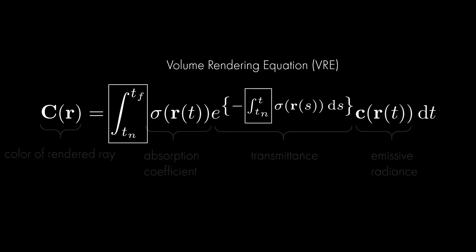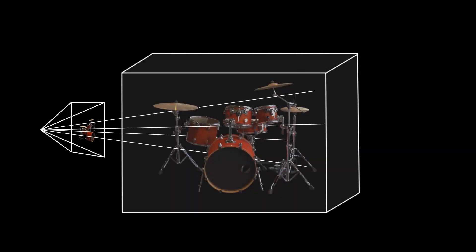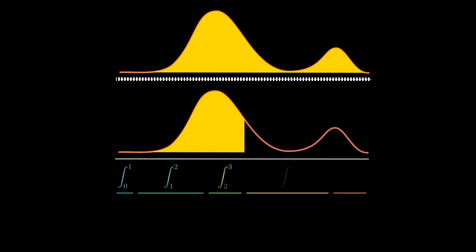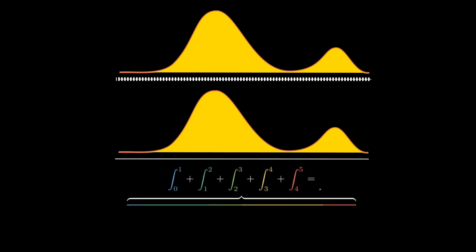Since this equation contains nested integrals, we cannot immediately apply AutoInt. Instead, we introduce a piecewise approximation to learn efficient closed-form solutions to integrals along sections. So at inference time, rather than approximating the integral along the ray with hundreds of forward passes through a neural network, we evaluate it efficiently using AutoInt for each piecewise section along the ray.